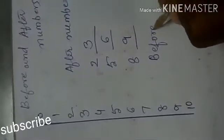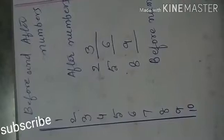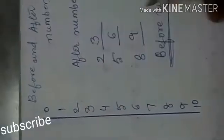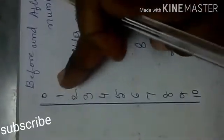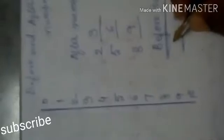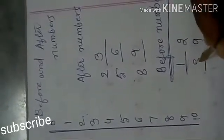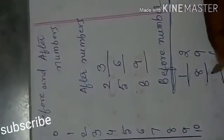Then we go for before numbers. Here 2 is there — what is there before 2? Before means above numbers, which is present above. Above the 2 is 1. 9 before it is 8. 6 before it is 5.